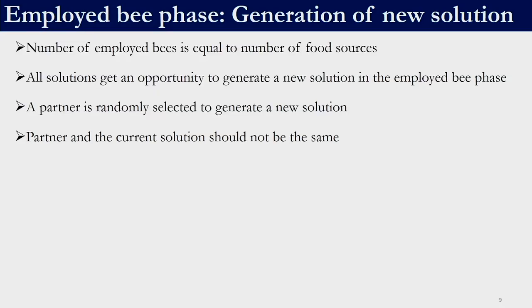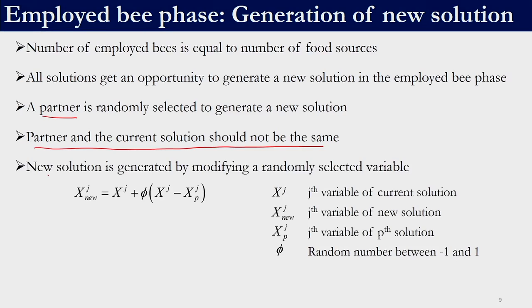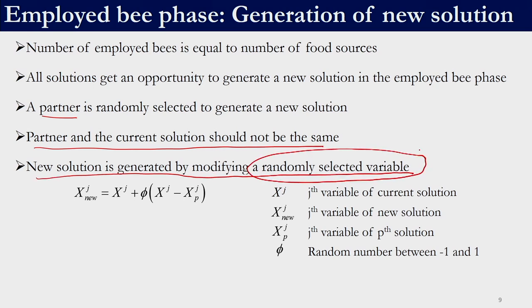ABC algorithm has a unique feature which keeps track of the number of failures. Whenever a solution is used to generate a new solution, if the new solution is better it enters the population via greedy selection. If a solution fails to generate a better solution, we track the number of failures. This is formally called the trial counter. In the employed bee phase: the number of employed bees equals the number of food sources, and all solutions get an opportunity to generate a new solution. A new solution is generated by selecting a random partner and modifying a randomly selected variable — only one variable is changed, not all.